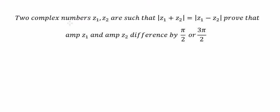Two complex numbers z1 and z2, such that the absolute value of z1 plus z2 equals the absolute value of z1 minus z2. We want to prove that z1 and z2 differ in argument by π over 2 or 3π over 2.